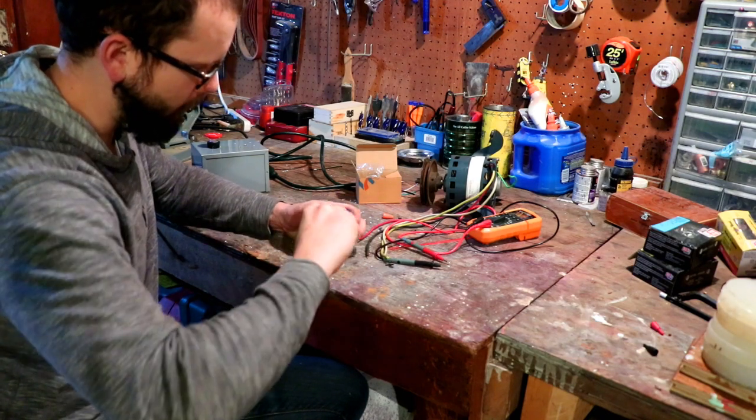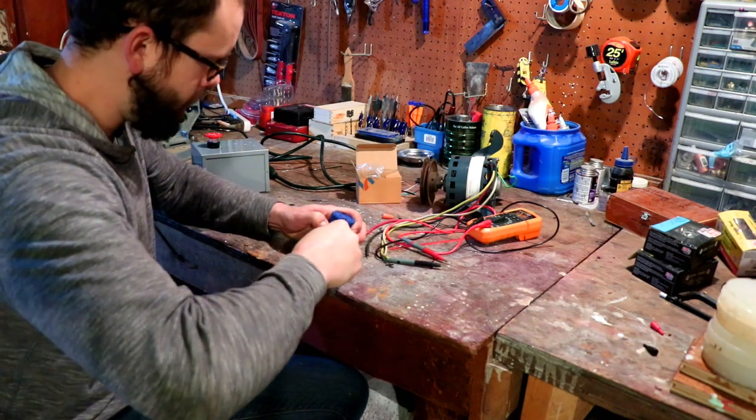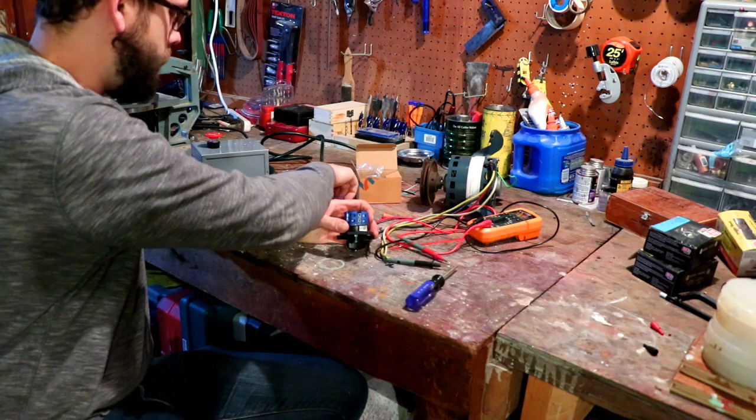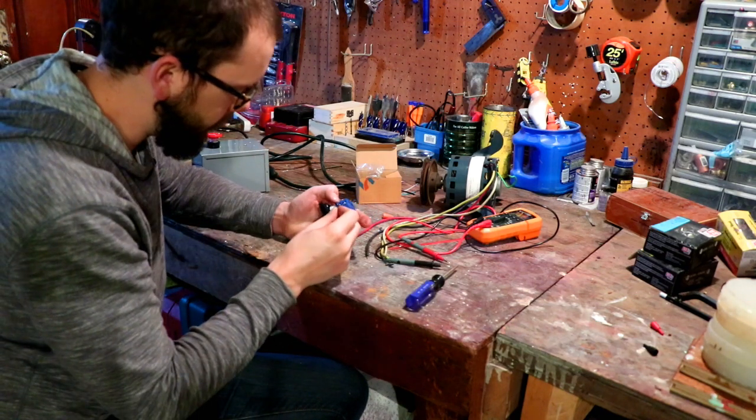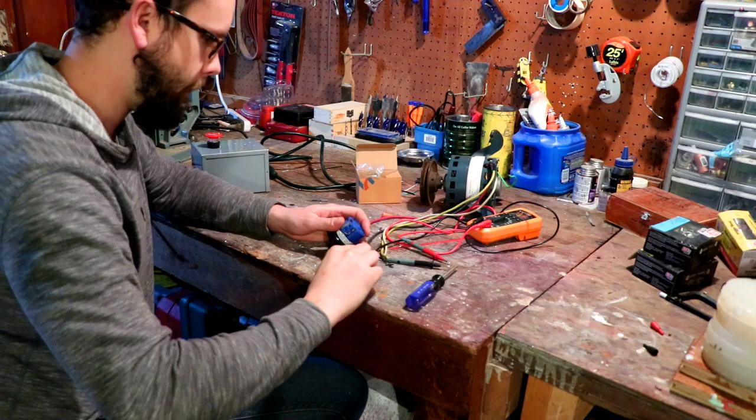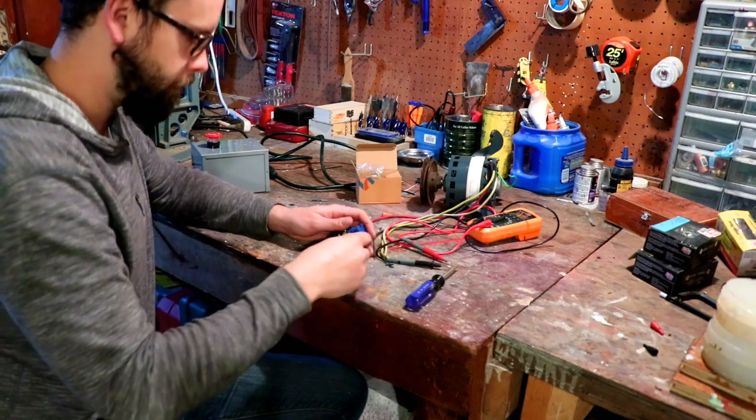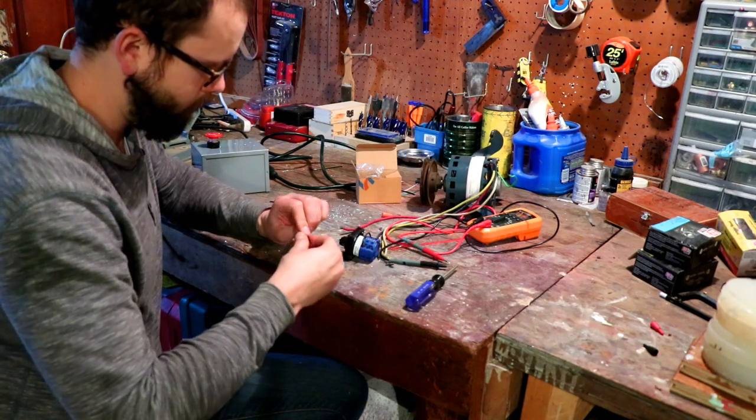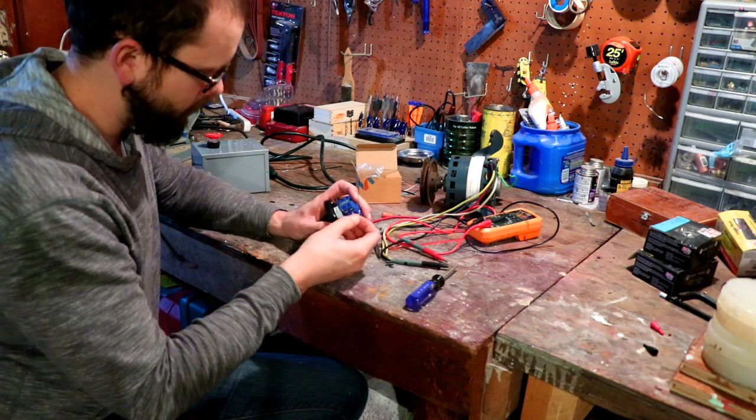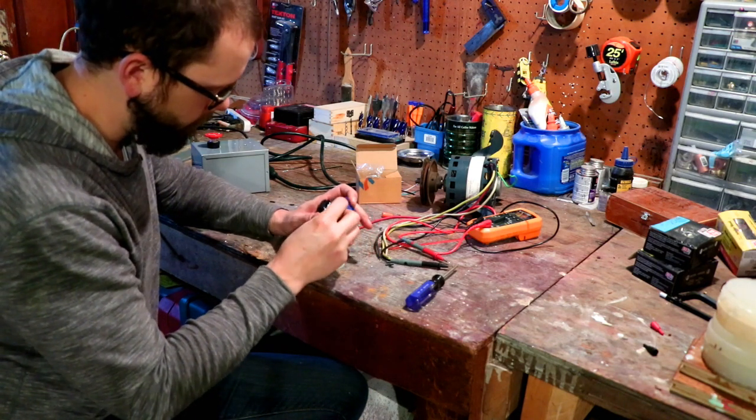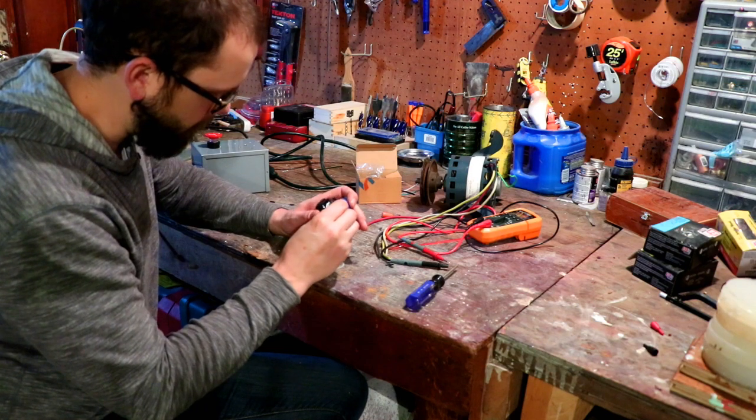So now we're jumping one to three with just a little piece of 14 gauge wire that I cut off. And I'll jump one to five. And then I can tighten my terminals down.